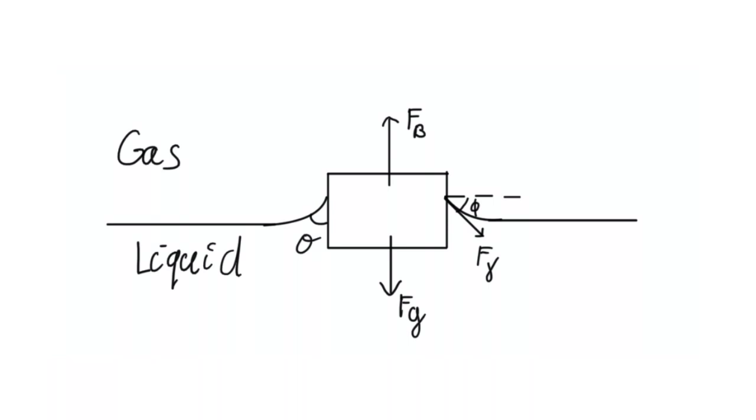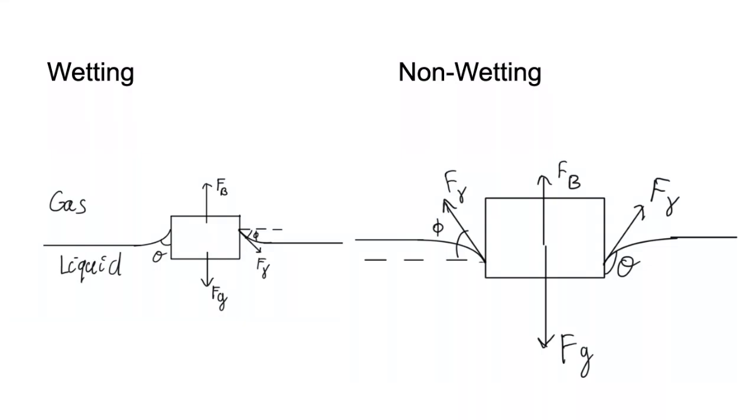This is known as the contact angle and it is a property of the material of the object and the liquid and gas. Because the surface of the liquid has to meet the object at this angle, it either slopes up around the object, we call this wetting, or the liquid slopes down around the object, we call this case non-wetting.